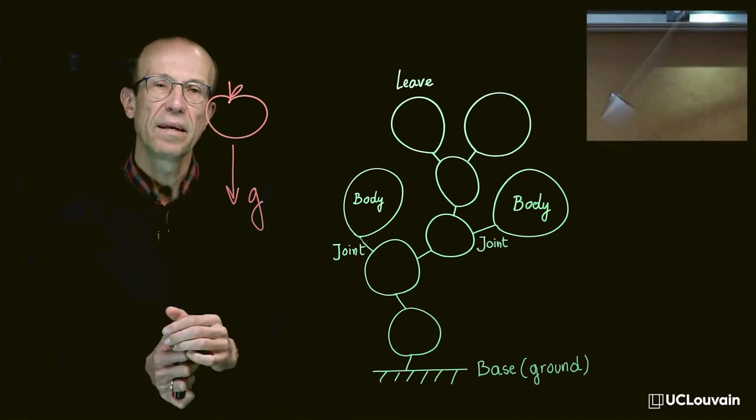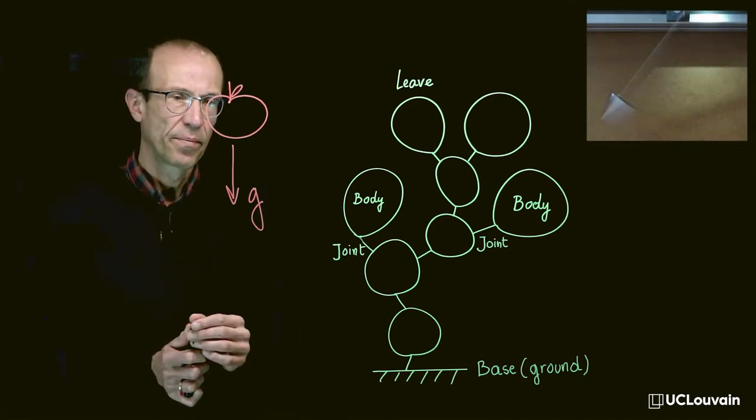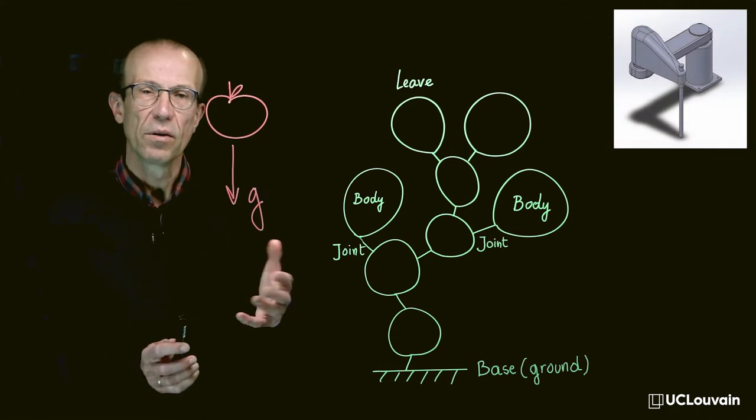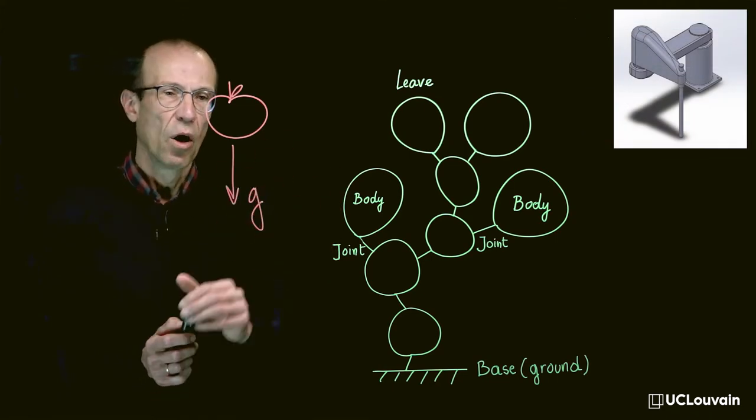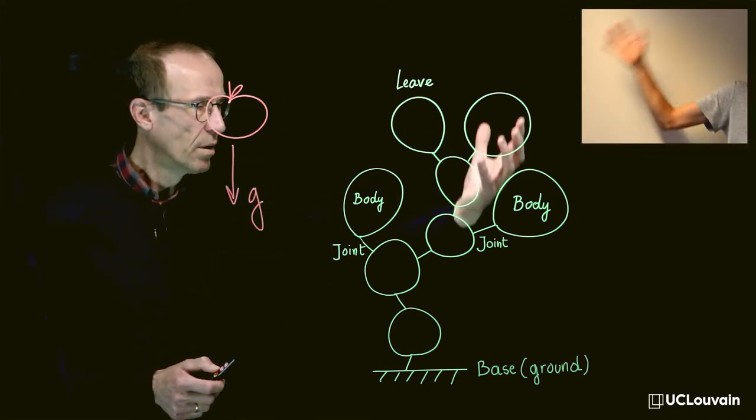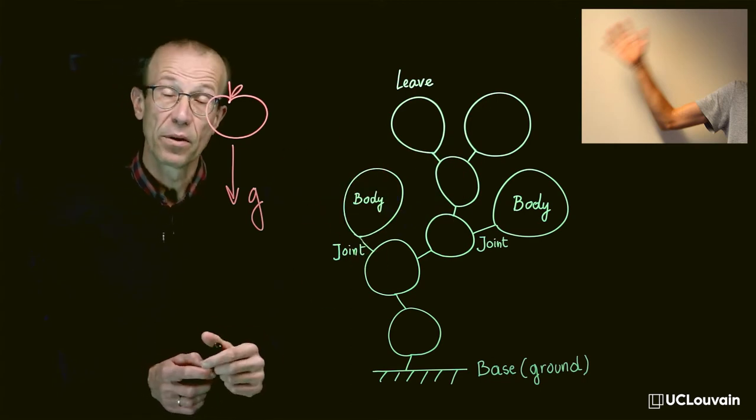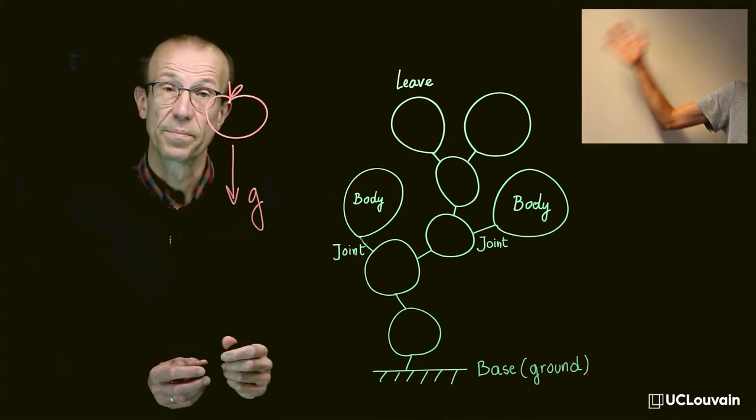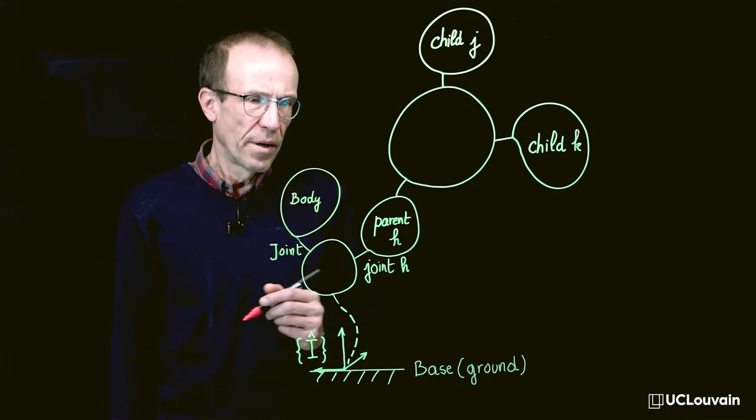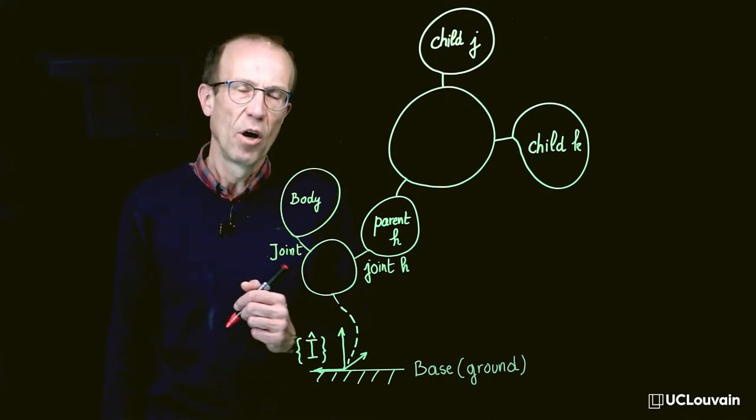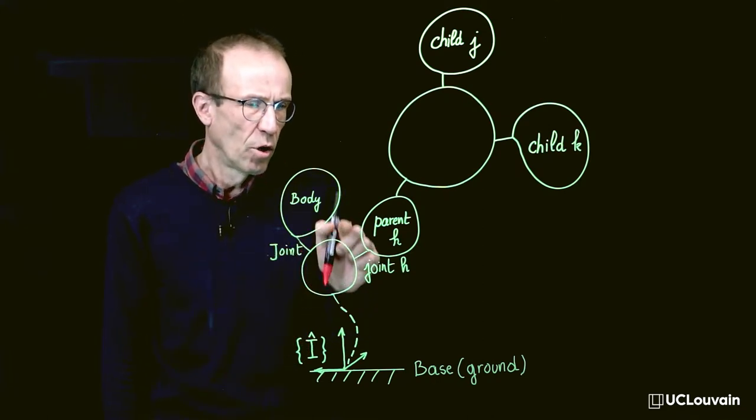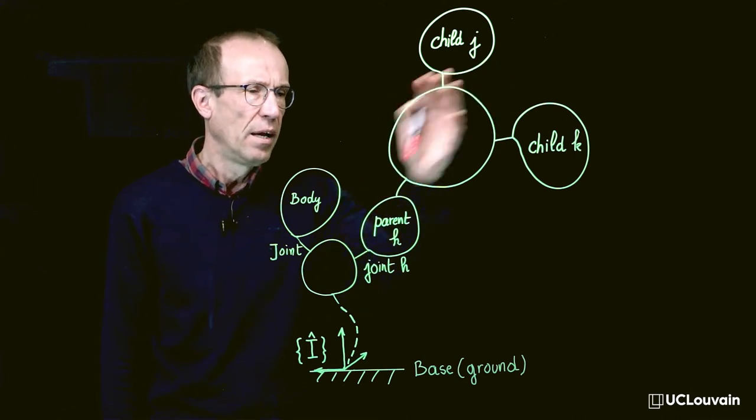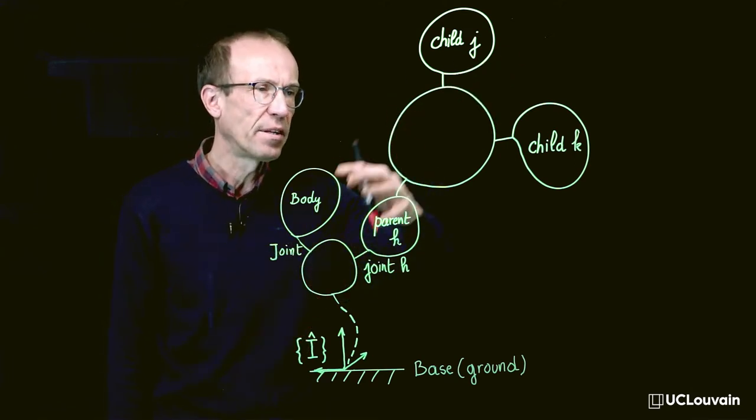A pendulum hanging from the ceiling, a robot manipulator manipulating a load, or even the human arm represent typical examples of multibody systems. A tree-like multibody system is in fact a succession of joints and bodies which represent kinematic chains.